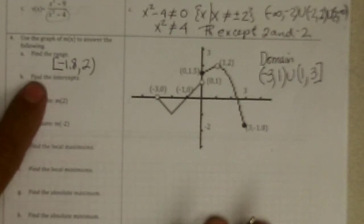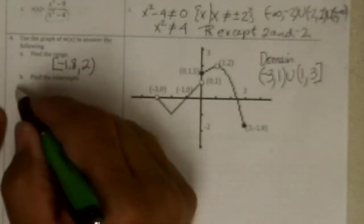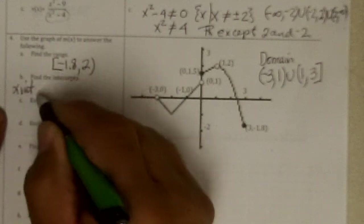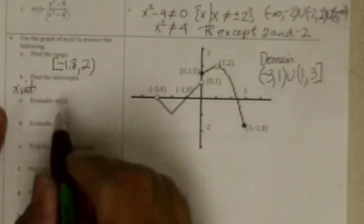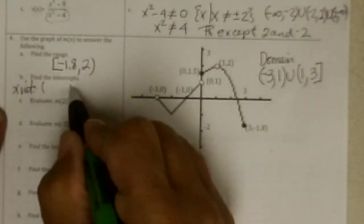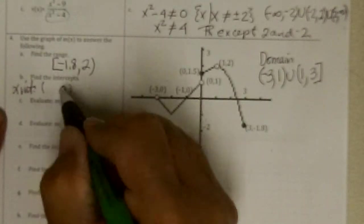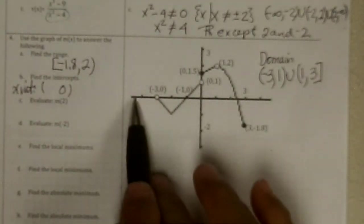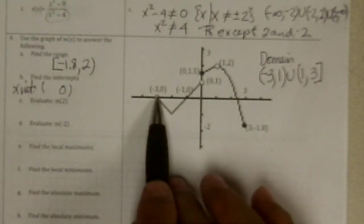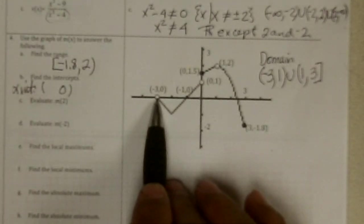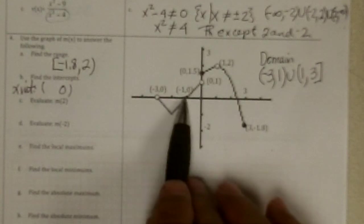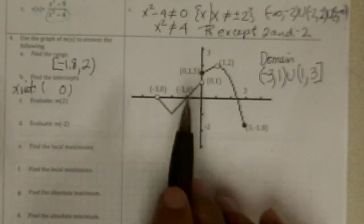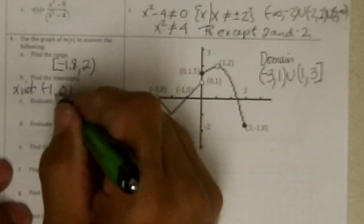Find the intercepts. Well, there's going to be x-intercepts. And they're points. So you better list them as points. And x-intercepts have y's as zeros. And that's where it hits the x-axis. Looks like here, but that's not there. That's a hole. And it looks like it hits here at negative 1, 0.